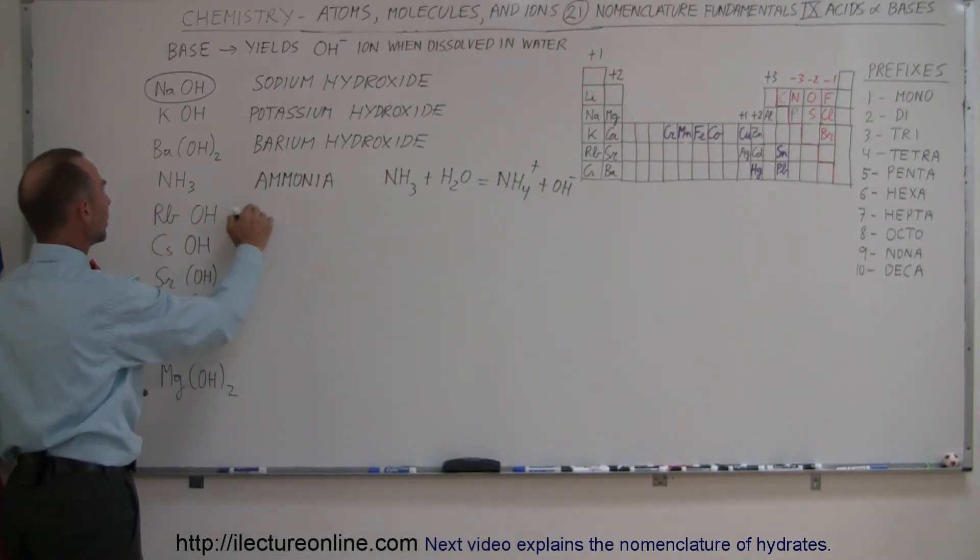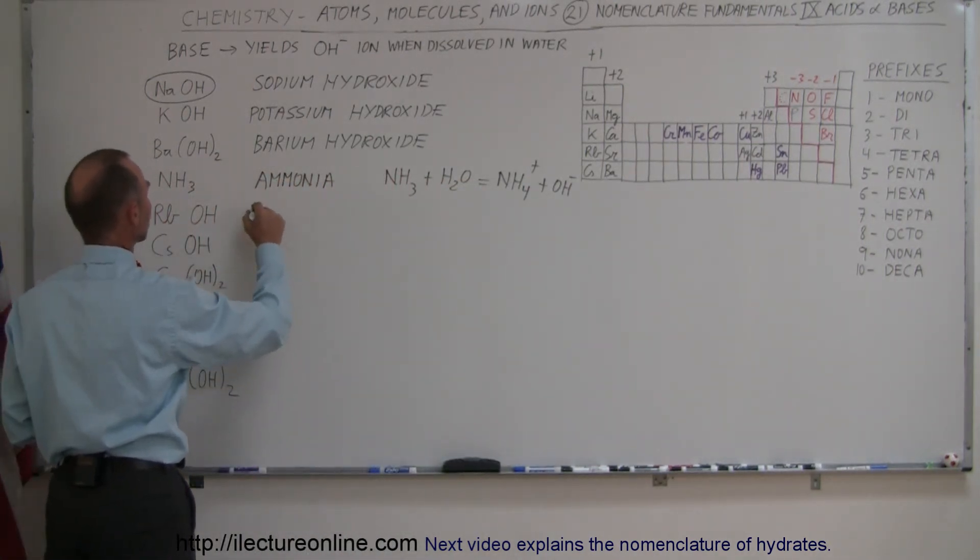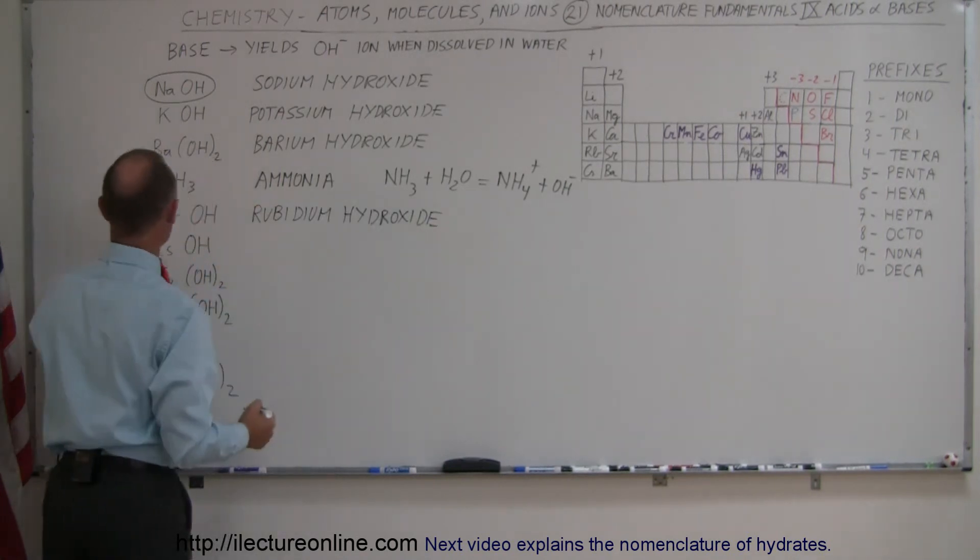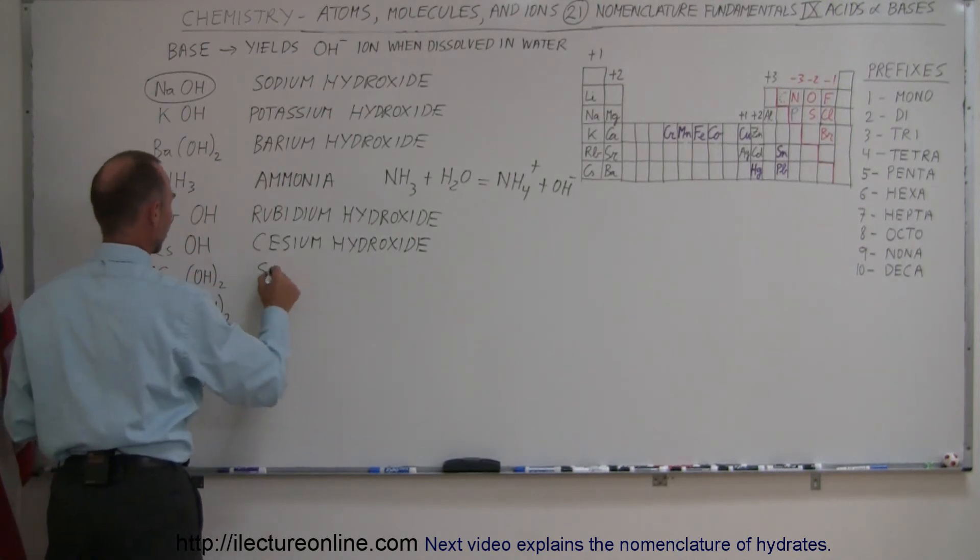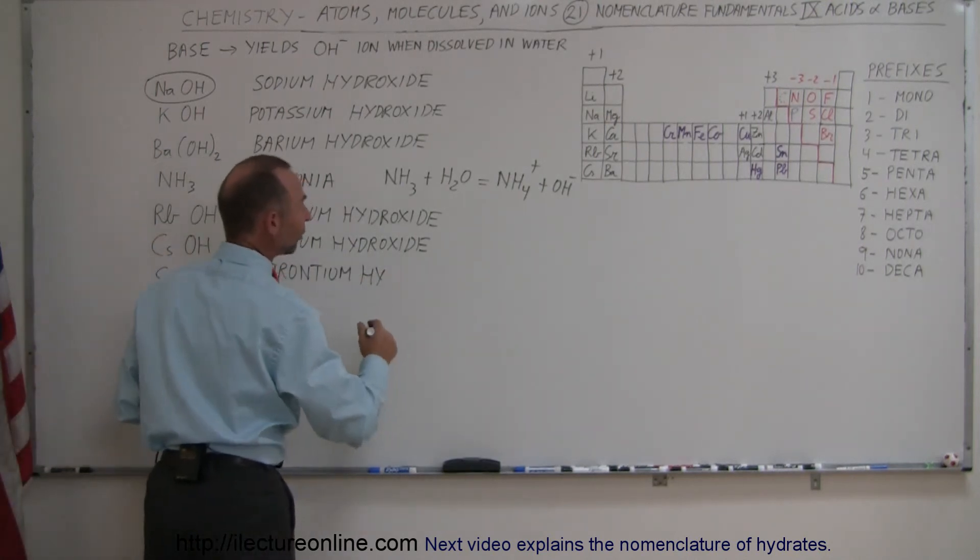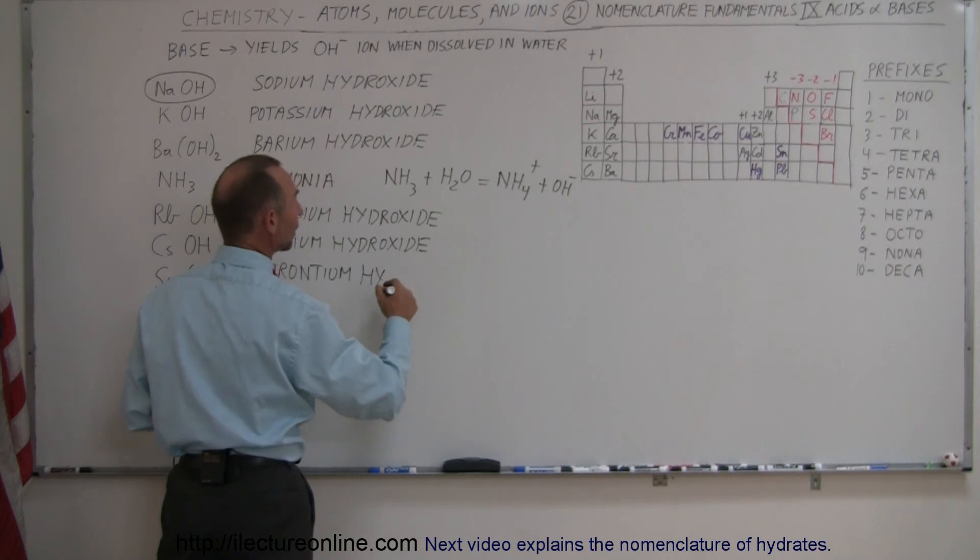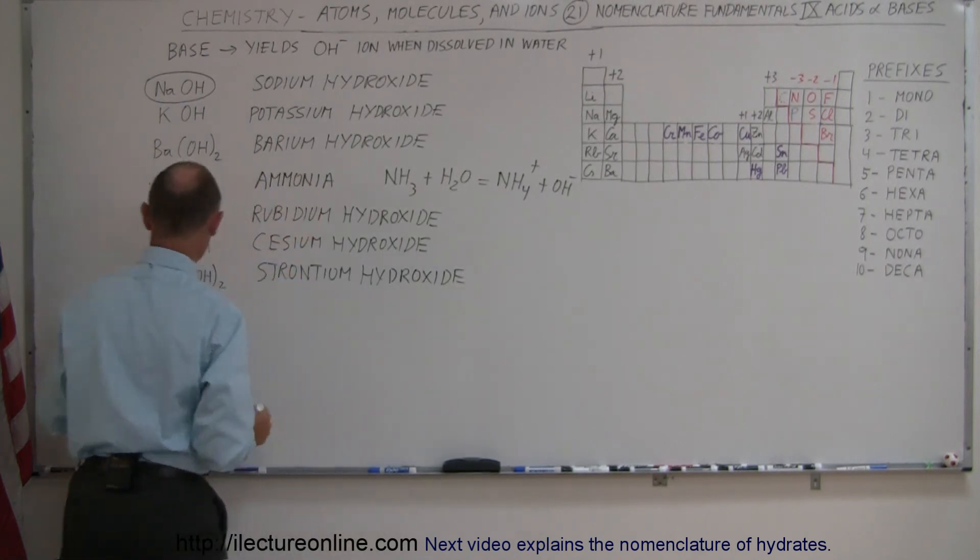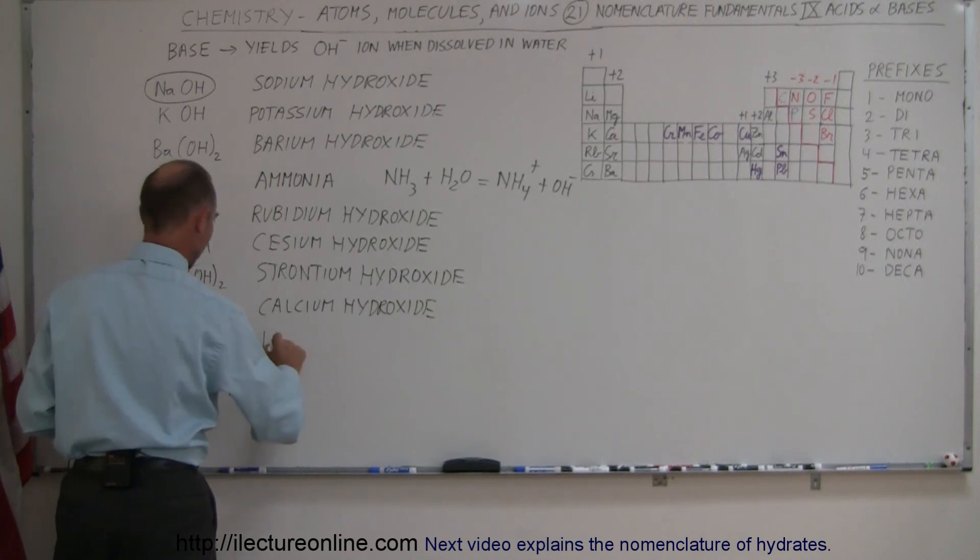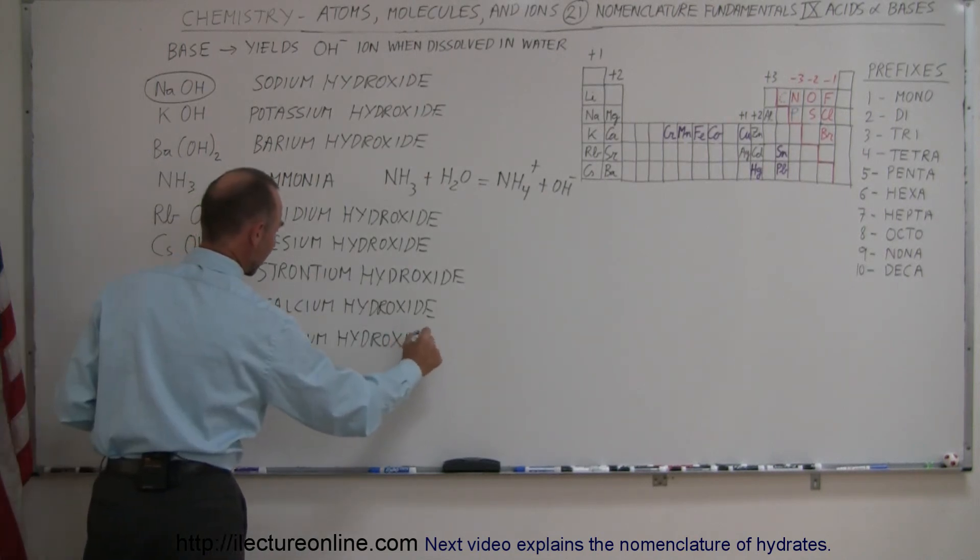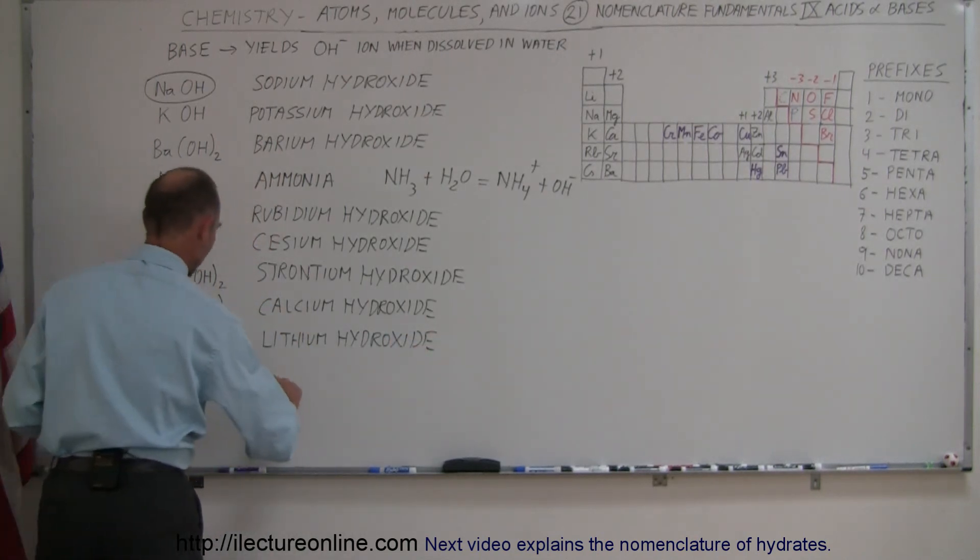So this is called ammonia, this is called rubidium hydroxide, this is cesium hydroxide, this is strontium hydroxide. You can see that all the alkali elements and all the alkaline earth elements form all these different kinds of hydroxide compounds, and they're all bases. This is calcium hydroxide, this is lithium hydroxide, and finally we have magnesium hydroxide.